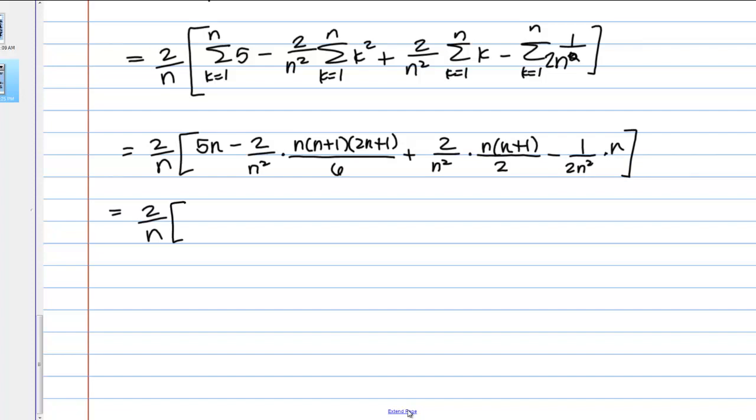Okay, so let's clean up a little bit inside the bracket. So, I have 5N minus, so here I have a product. I have N's in the top and bottom, so I can do a little canceling there. I can cancel out a factor of 2, so I end up with N plus 1, 2N plus 1 over 3N, plus, okay, here I can cancel out 2's and a factor of N, so I have N plus 1 over N, minus, and here I can cancel out a factor of N, so 1 over 2N.